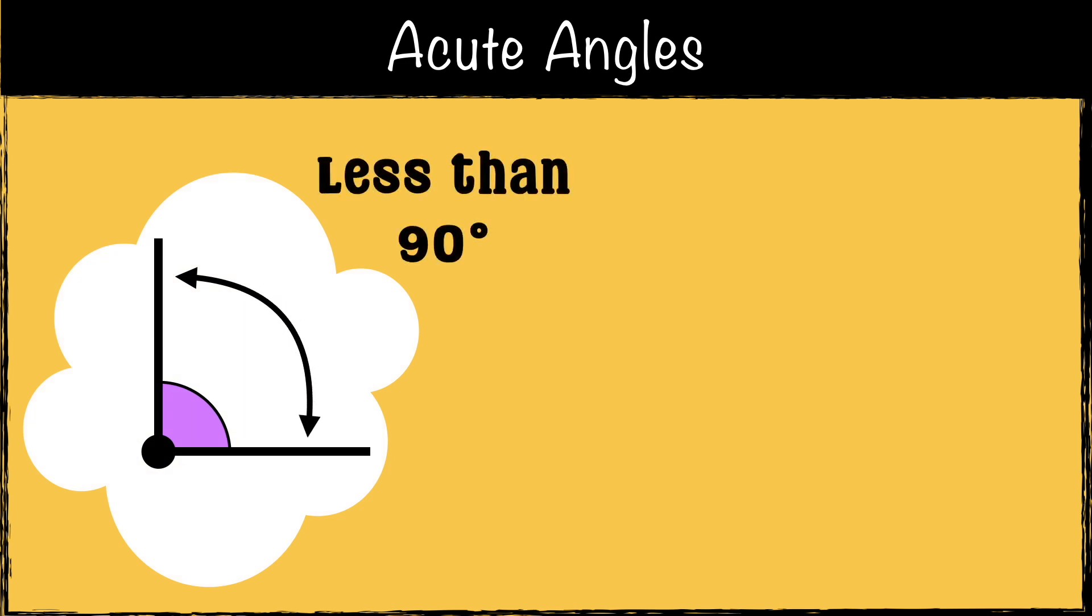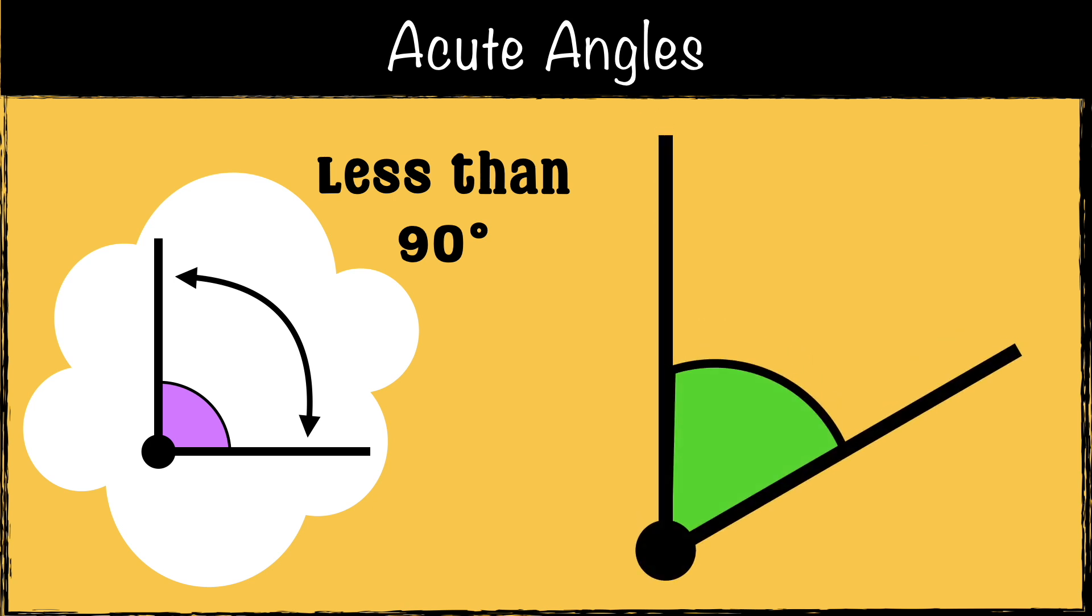First, let's take a look at the smallest type of angle: an acute angle. Acute angles will always measure less than 90 degrees. Here's an example of an acute angle. A good way to remember acute angles is that they are cute and small.